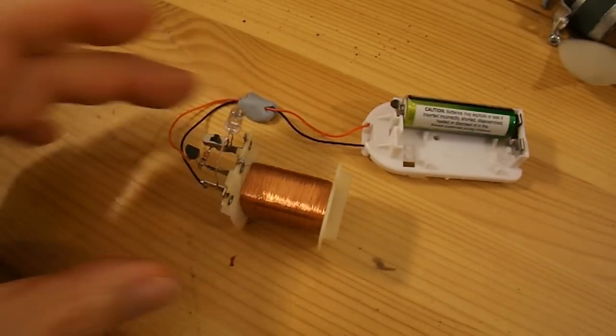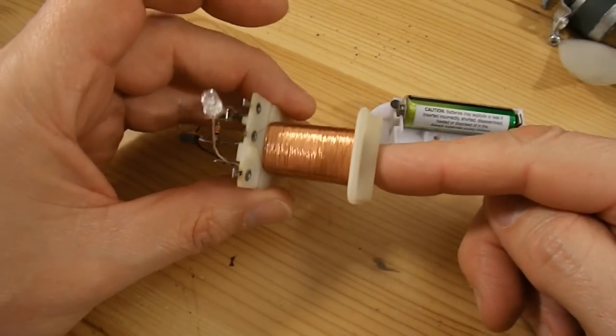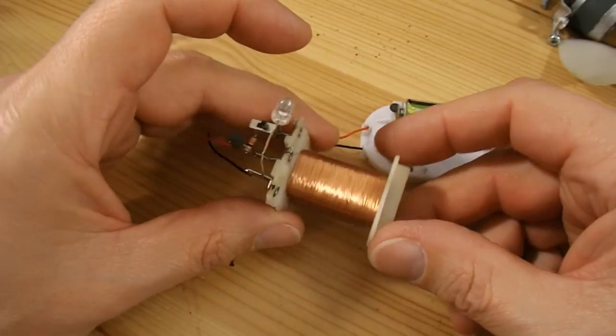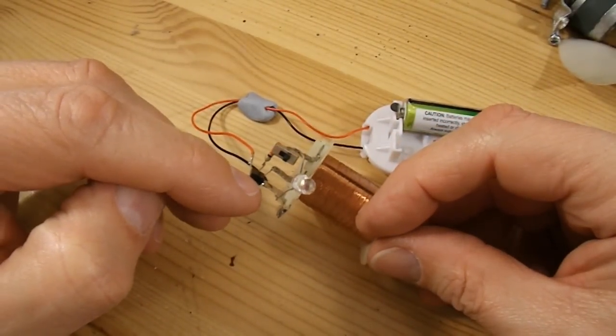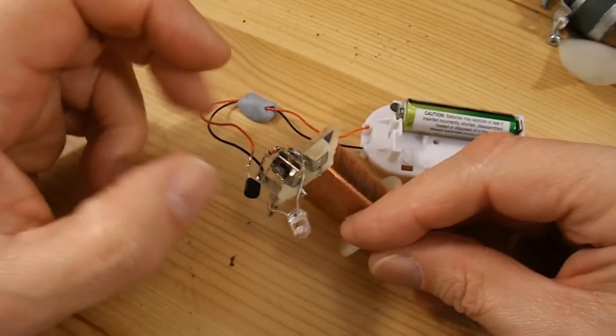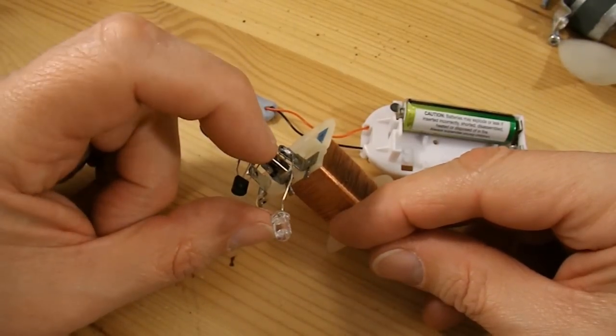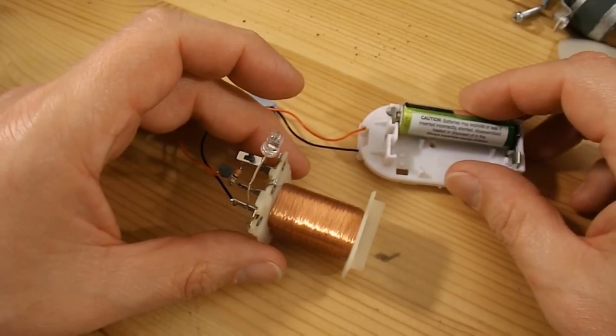There we go. All assembled. The coil from the motor, from the fan, from the microwave oven. LED, 2N2222 transistor. I've got a 33 ohm resistor there. On-off switch. 1.5 volt battery.